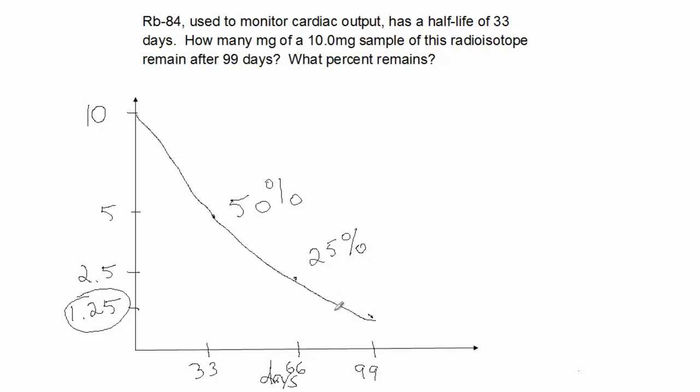At three half-lives, we're at 12 and a half percent, or 12.5% of 10 is 1.25.